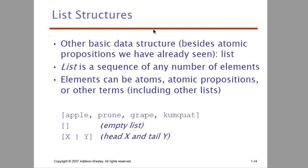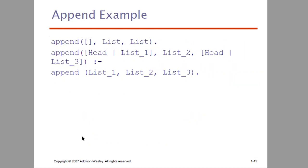Next, we have list structure. List structure is the basic data structure in Prolog. We already learned atomic propositions. A list is a sequence of any number of elements — atoms, atomic propositions, or any other terms including other lists. A list is represented with open bracket and close bracket. Here you can see a list of fruits: Apple, Prune, Grape, and Comcat — these are 4 elements in the list. There is also an empty list, and a list with head X and tail Y.